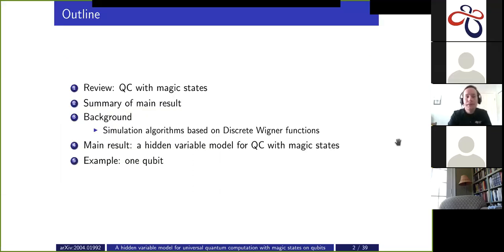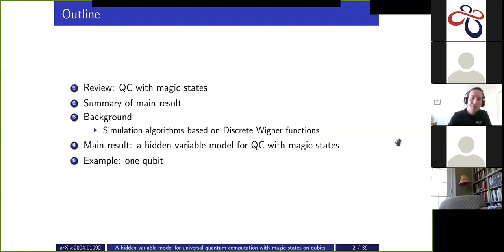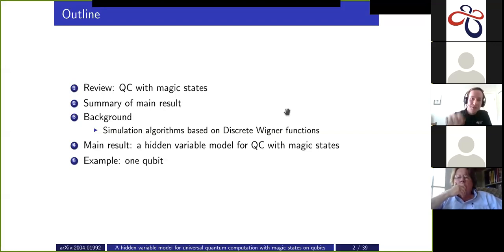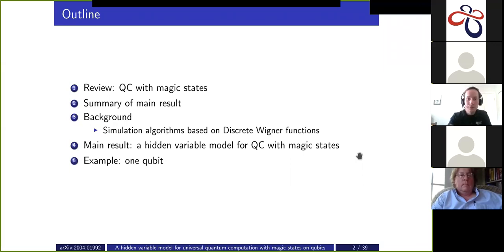Here's a rough outline of what I'll talk about. First I'll start by giving a review of the computational model we're interested in, which is quantum computation with magic states. Then I'll briefly summarize the main result. After that I'll give some background material on classical simulation algorithms for quantum computational magic states based on discrete Wigner functions. We have a lot of people here from different backgrounds, so I erred on the side of including more rather than less in this section. The background in John's talk actually sets this up pretty well, so thanks for that.